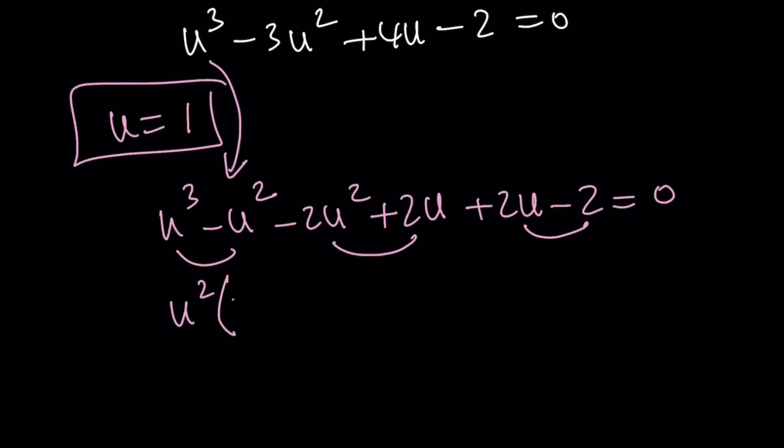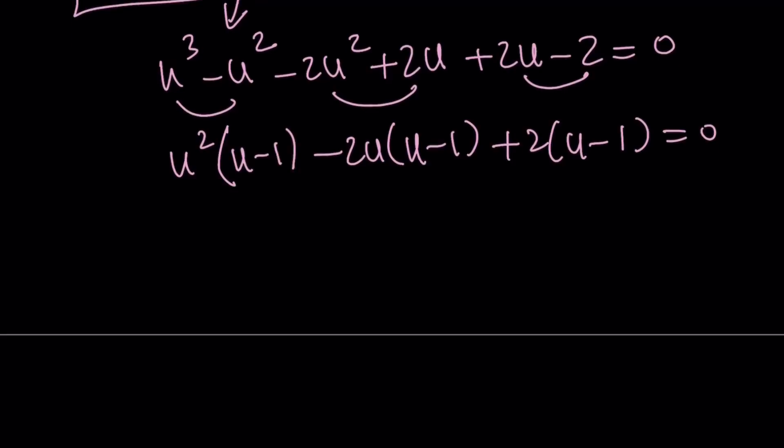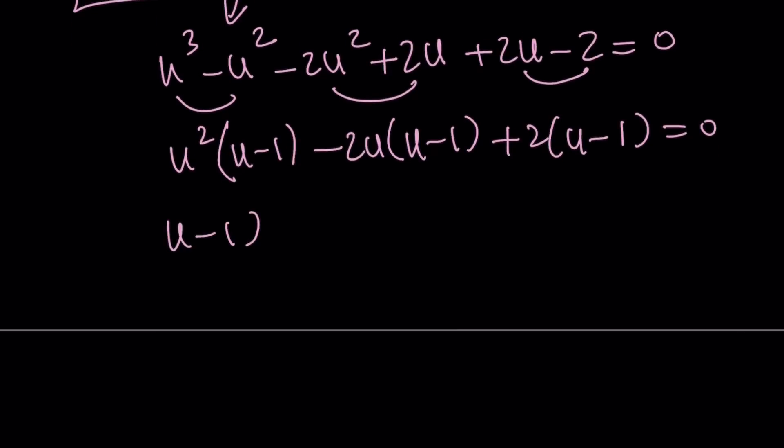Factor out u², u minus 1, minus 2u, u minus 1, plus 2 times u minus 1. Great. So now u minus 1 can be taken out. u² - 2u + 2 = 0.